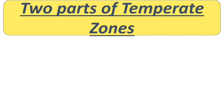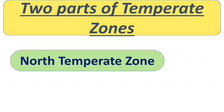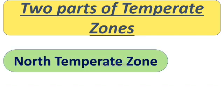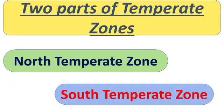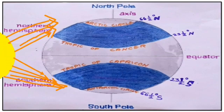Now we will talk about the Temperate zones. There are two temperate zones: the North Temperate zone and the South Temperate zone. See in the picture — you will notice two blue color portions of the earth. They are the Temperate zones, and they receive slanting sun rays as you can see.